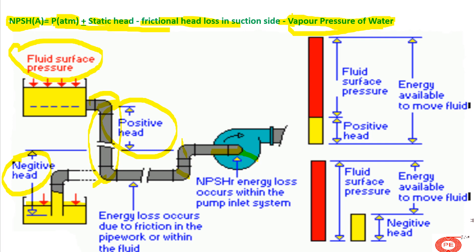Before concluding, I want to clarify the units, as many people get confused. Make sure all units are in meter water column, because most pump suppliers provide NPSHR in meter water column. P_atmosphere (1 atmosphere) equals 10 meter water column. Static head should be calculated in meter water column. Frictional head loss should also be in meter water column. Vapor pressure is in Torr, but it can be converted to meter water column by a simple multiplication factor. Ensure your units are correct so you don't calculate a wrong NPSHA.